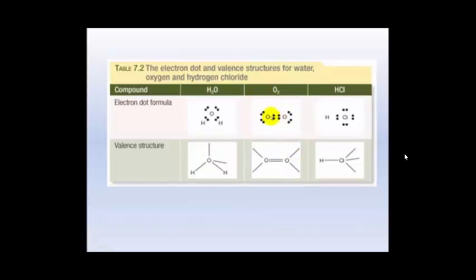With oxygen, there are two electron pairs, so there are two lines — and this is a double covalent bond. And here there is one bonding pair between the hydrogen and the chlorine, and we've got three lone pairs, or three non-bonding pairs of electrons.